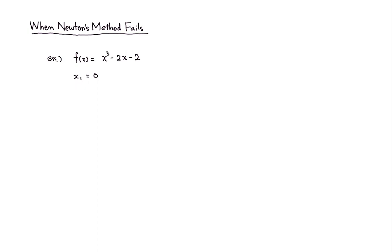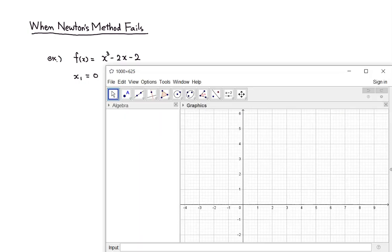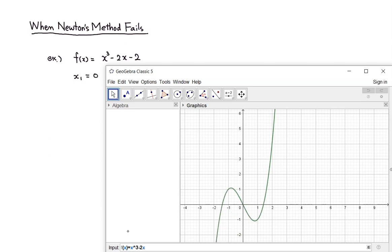Let's look at the case where Newton's method completely fails. Here's an example: f of x is equal to x cubed minus 2x minus 2, and you happen to choose the initial guess to be 0. So let's go through Newton's method blindly. We're going to define f of x as x cubed minus 2x minus 2.